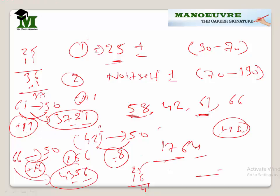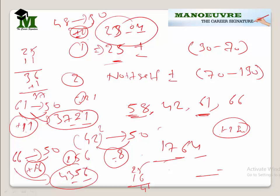What if you have to find the square of 48? It is 2 less from 50. 2 squared is 4, but we must always write 2 digits, so I write 04. Since it is 2 less, subtract from 25 to get 23. So 2304 is your answer. I hope the funda is clear for finding squares in the range of 30 to 70. Take some numbers and practice — it will be helpful when you come across questions.